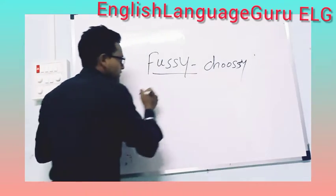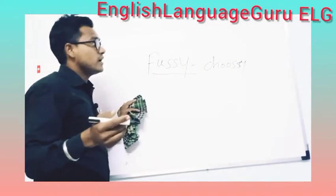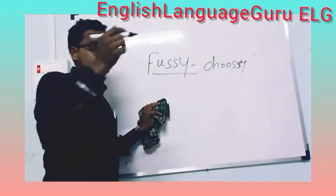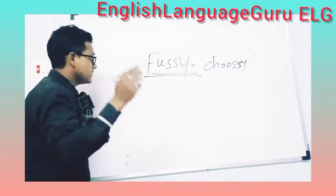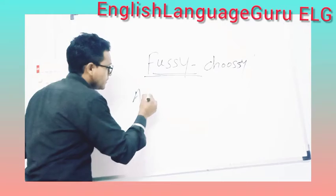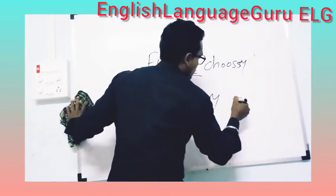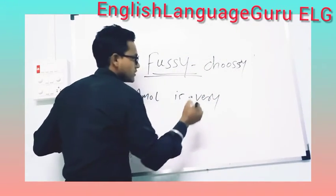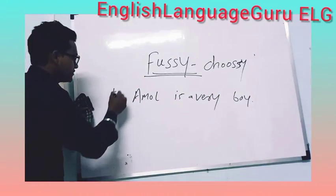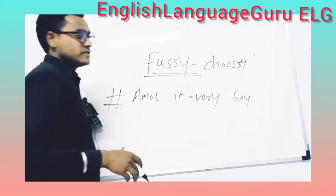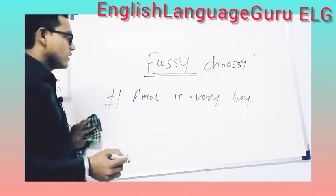For example with 'fussy': there are so many children who are fussy while choosing anything. My friend Amor is a very fussy person. I'm going to give you a simple sentence so you can get the exact meaning of this word and note it down.